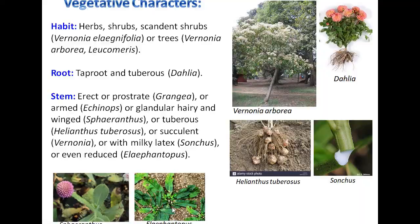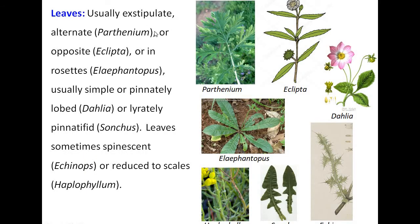Leaves are usually exstipulate — exstipulate means stipules are absent. In Asteraceae, leaves are exstipulate. Leaves are alternate in Parthenium, opposite in Eclipta, or rosette in Elephantopus. Leaves are usually simple or pinnately lobed in Dahlia, lyrate-pinnate in Sonchus. Leaves are sometimes spiny-scent in Echinops, and reduced in Haplophyllum.